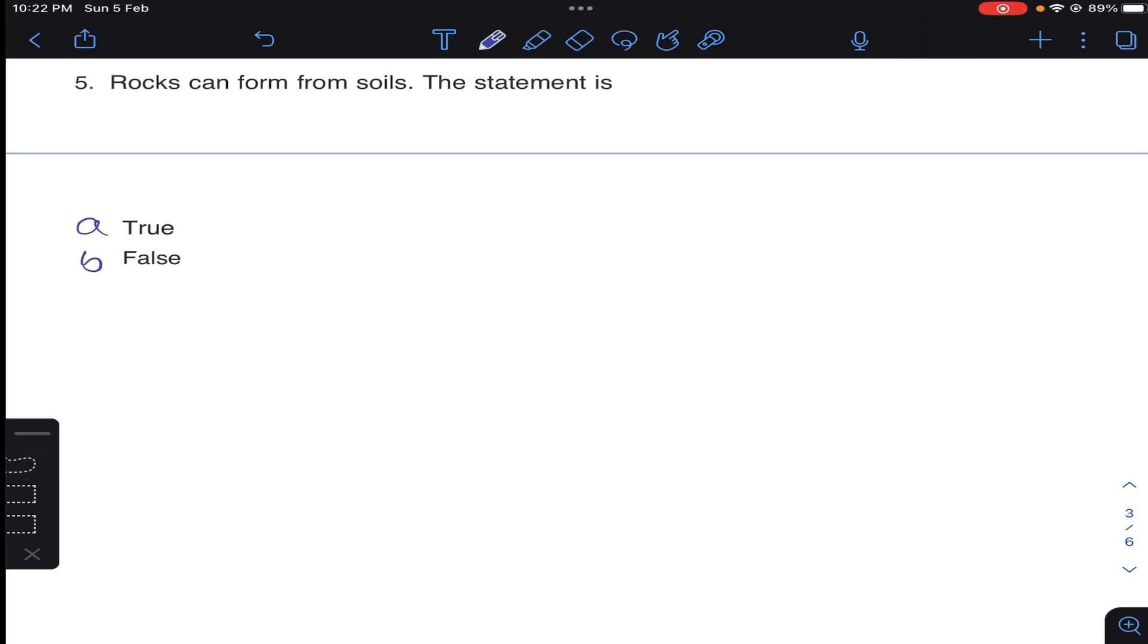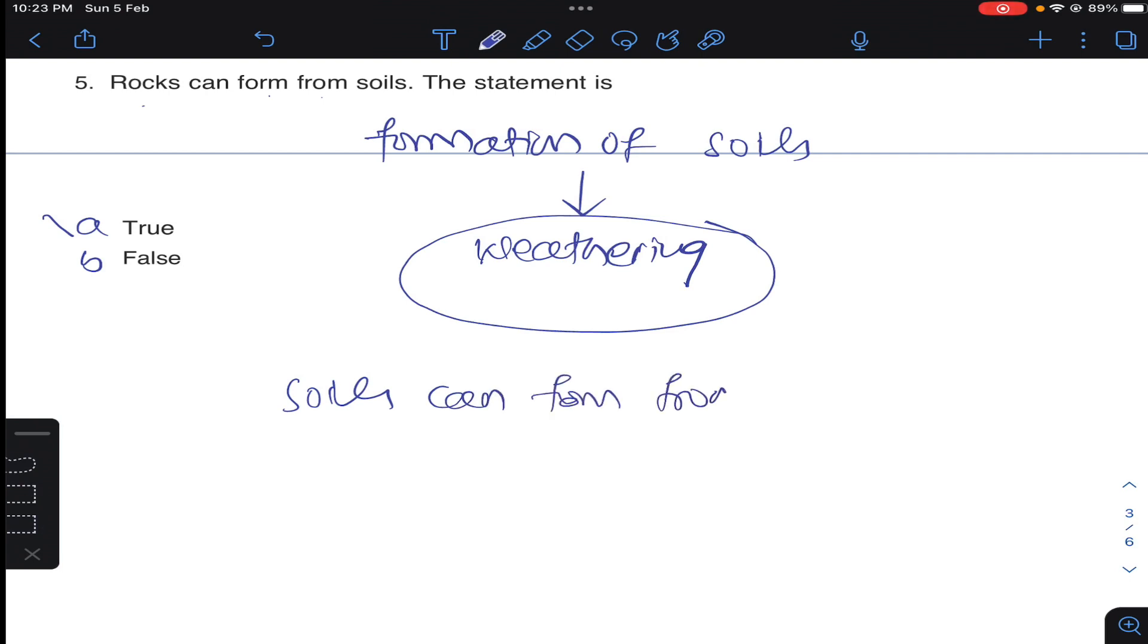Rocks can form from soils - the statement is obviously formation of soils is by weathering process. Soils can form from rocks - this is correct statement. But rocks cannot be formed from soils, it is a wrong statement, it is false.